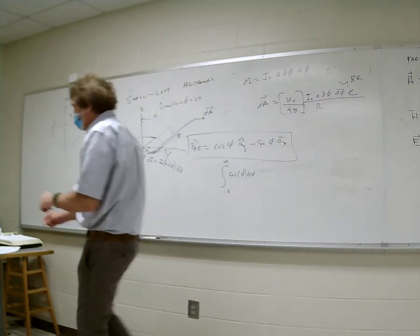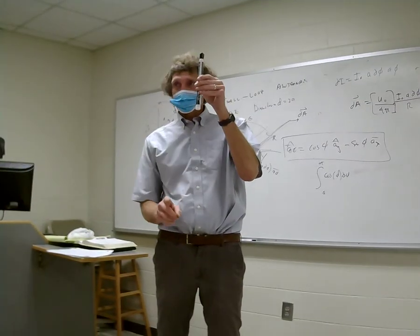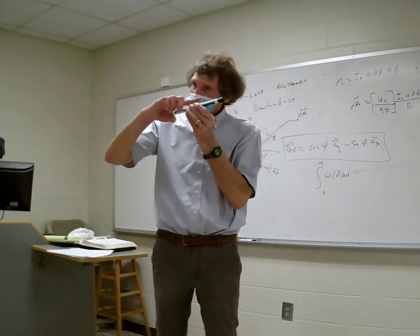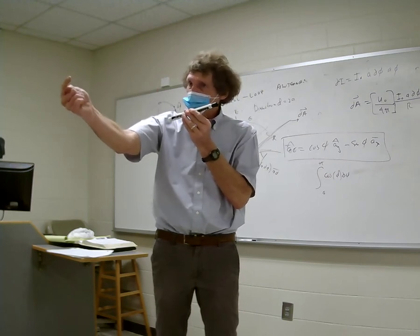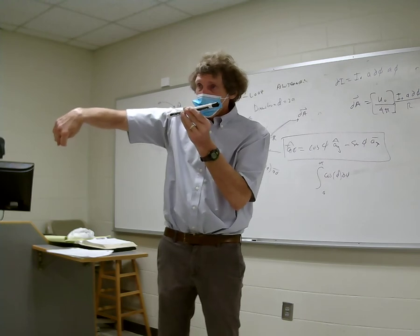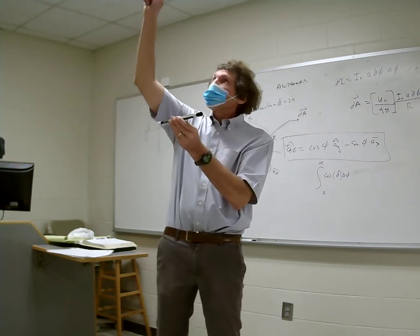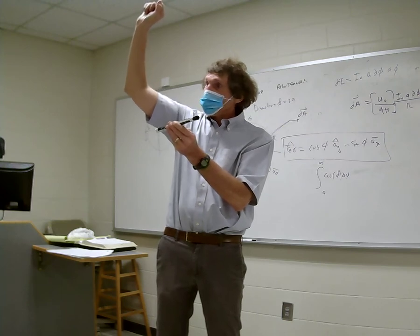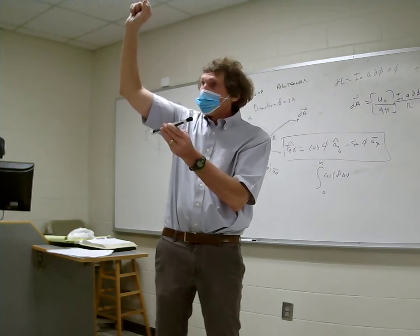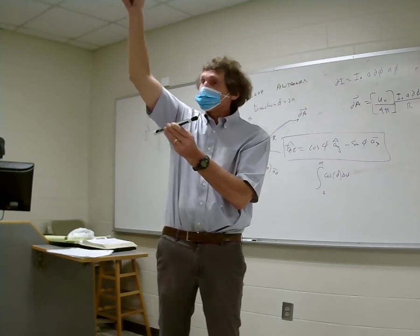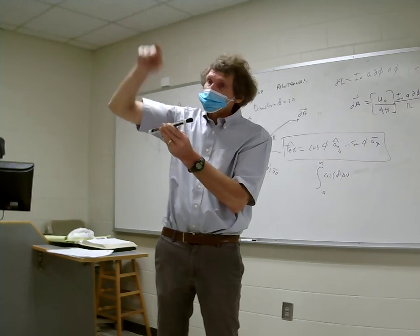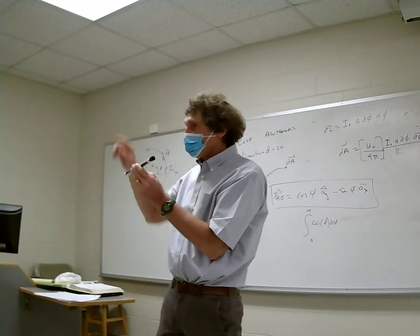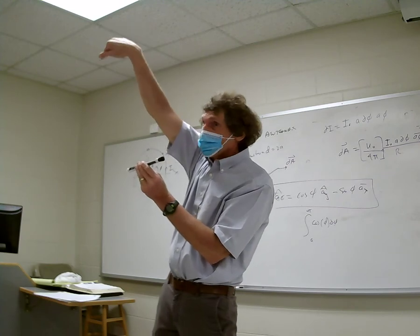If I took that short dipole and laid it horizontally, the E field in the XY plane would be horizontal. If I'm straight up, the E field — you take the radius vector from the center to the point of observation, and the E field is perpendicular to it and parallel to the dipole. So the E field direction changes based on where you observe it, but it's always perpendicular to r and in line with the dipole.